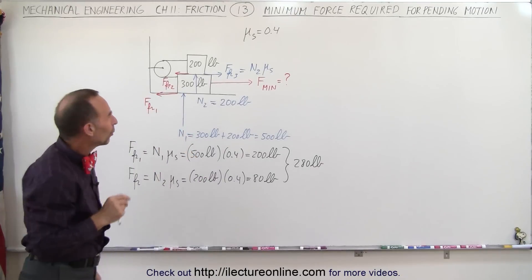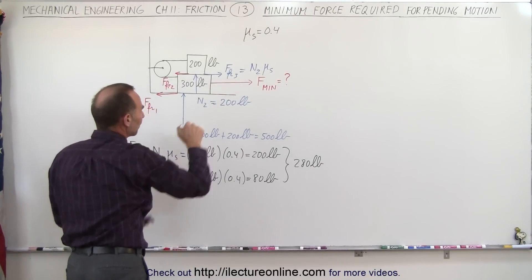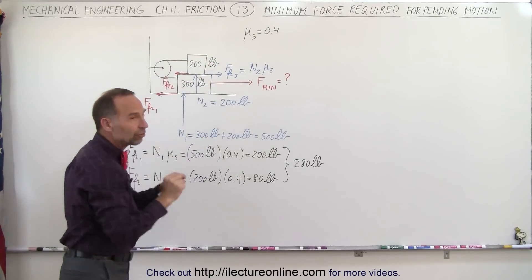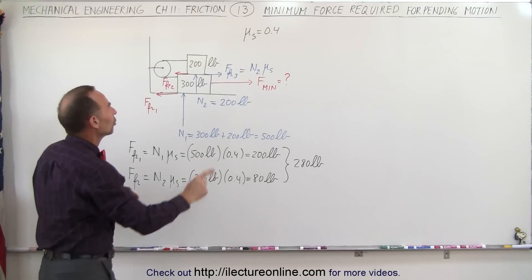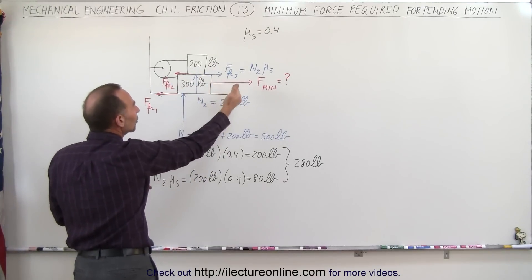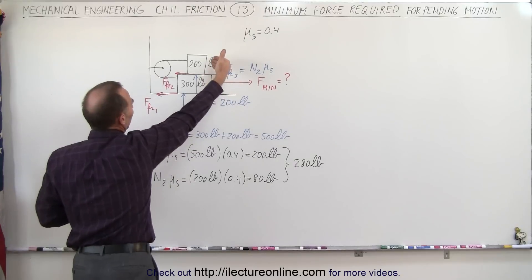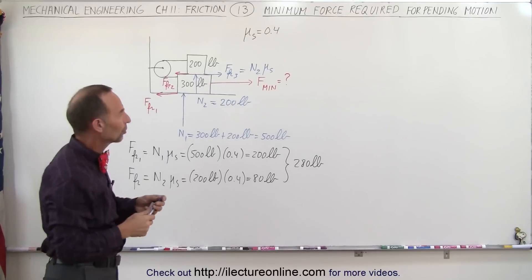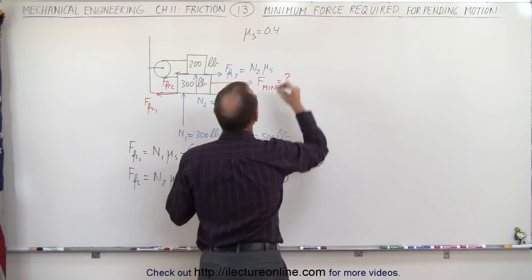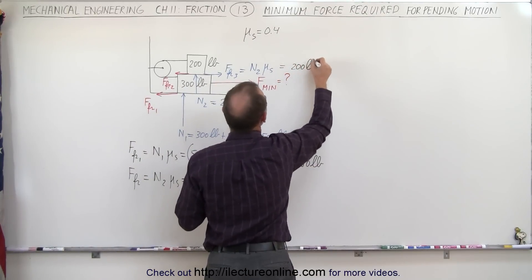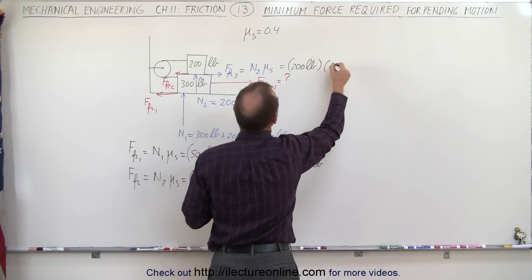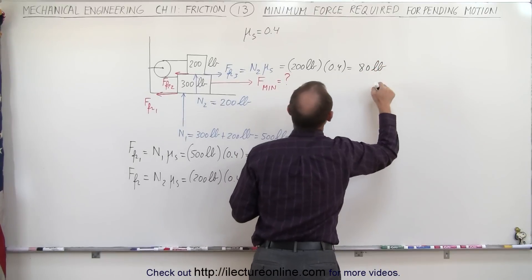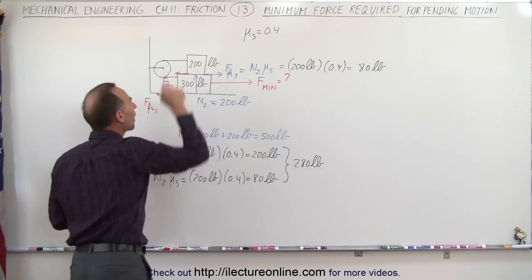You may wonder why this friction force acts in this direction. The reason is that this block is sliding to the left, and the direction of friction is always opposite to the motion the object would have without friction. Without friction, this block would readily slide to the left, and therefore the friction acts towards the right. So friction force 3 equals 200 pounds times mu sub s, which is 0.4, giving 80 pounds — meaning you need an additional 80 pounds to also move the top block.